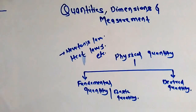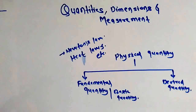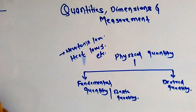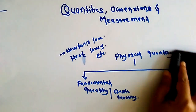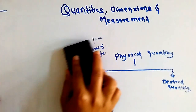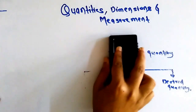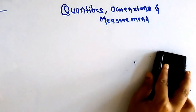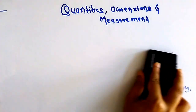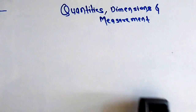Fundamental quantities are those quantities — those characteristics — which cannot be expressed in terms of other units. Suppose if I am going to a shop and saying to the shopkeeper, 'Give me a bowl of 5 meters' — that sounds somewhat awkward.